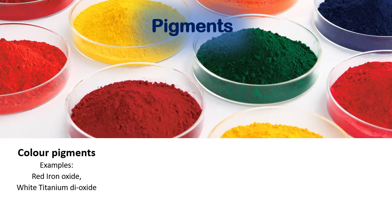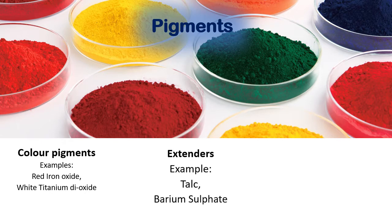Pigments perform a variety of roles — they are powdered solid particles dispersed in the paint. Colored pigments provide color to the coating. Extenders are added to give volume to the paint, minimizing the use of the polymer or resin, also called the binder. Since resins or binders are more expensive than extenders, using more extender reduces the cost of the paint.